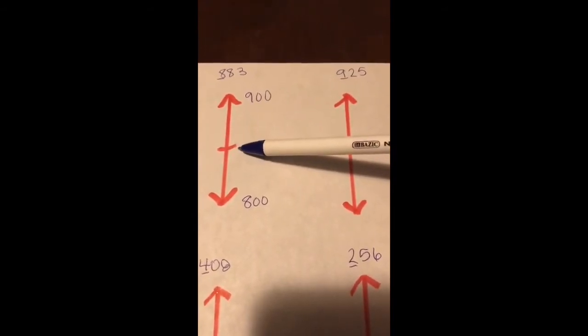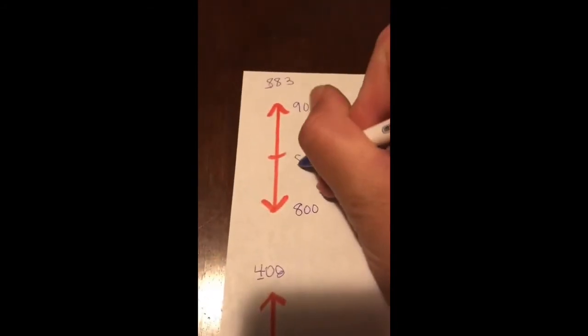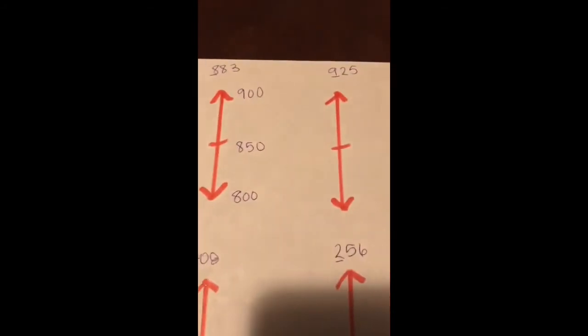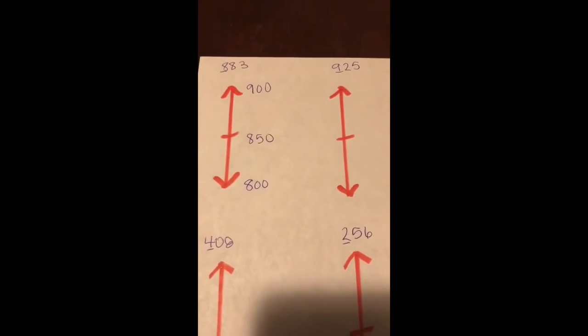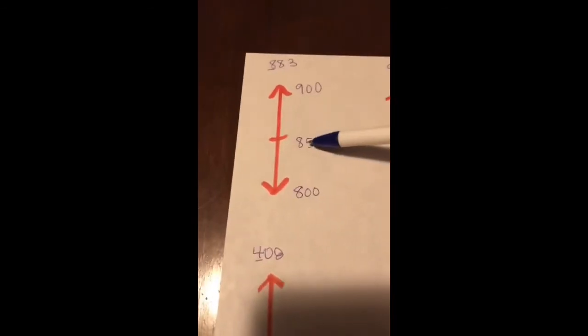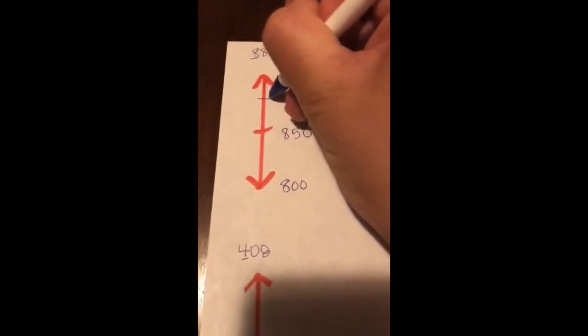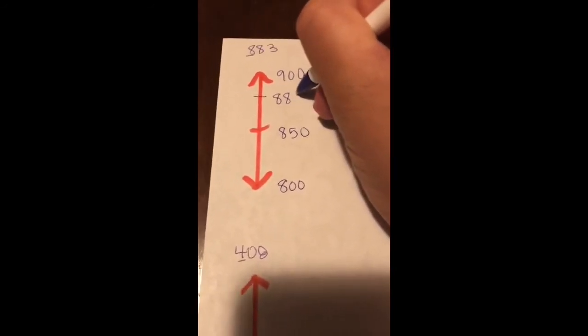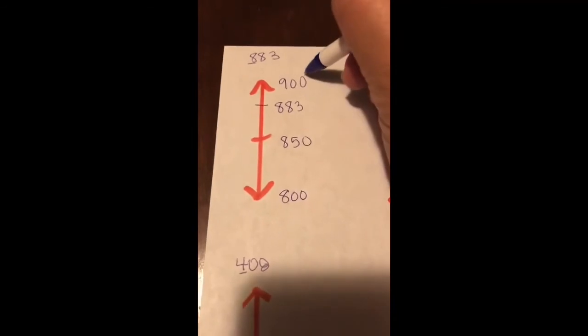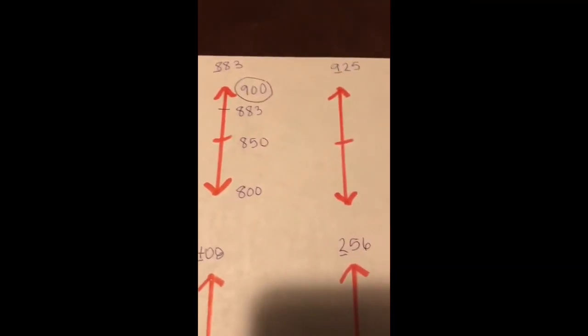This mid marker right here is called the midpoint. So halfway between 800 and 900 is 850. I'm going to place 850 as the mid marker. 883 is higher than 850. I'm going to place my 883 on the number line, which that specific number is going to round to 900.